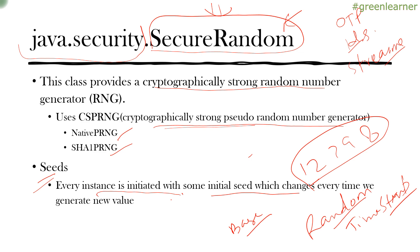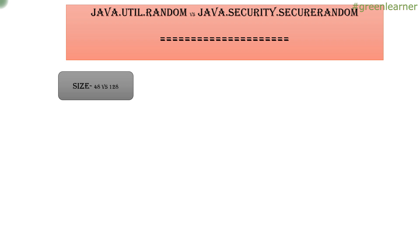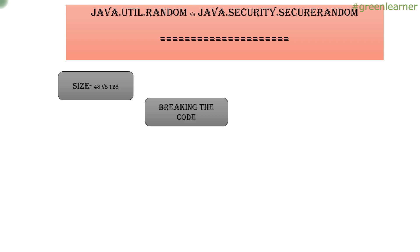Before leaving, let's take a high-level look at the differences between Random and SecureRandom. First, it's about the bit size: java.util.Random uses 48 bits, whereas SecureRandom uses 128 bits. You can think about permutation and combination — how difficult it is to guess and break the code. In any secure random number generator, it comes down to the delay you can introduce — that delay could be one day, two days, one year, two years, 10 years, 100 years, or even a million years. It's all about the algorithm you put into play to generate the random number.